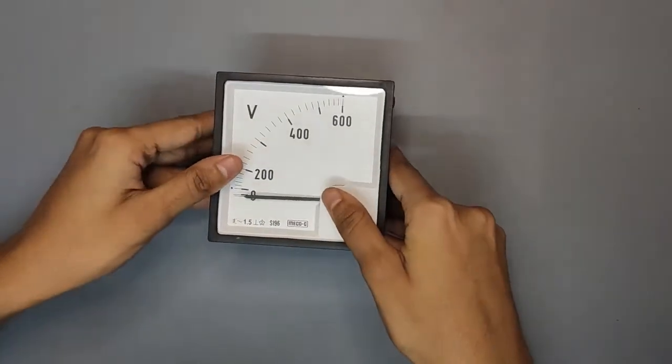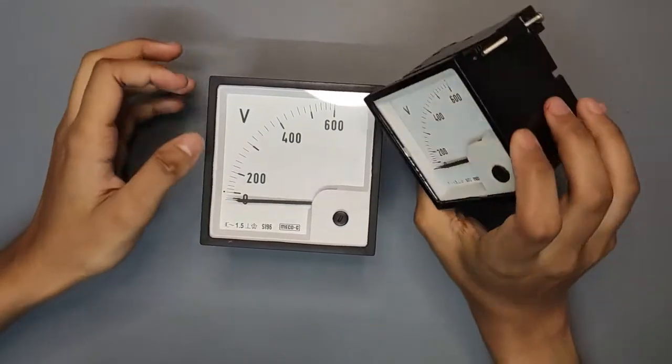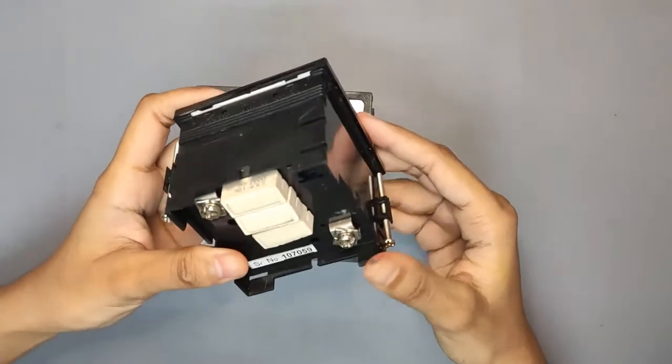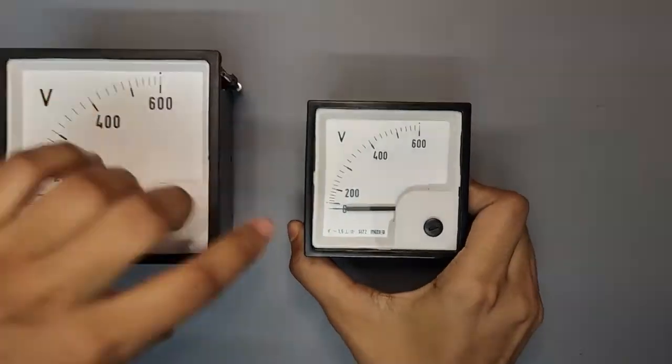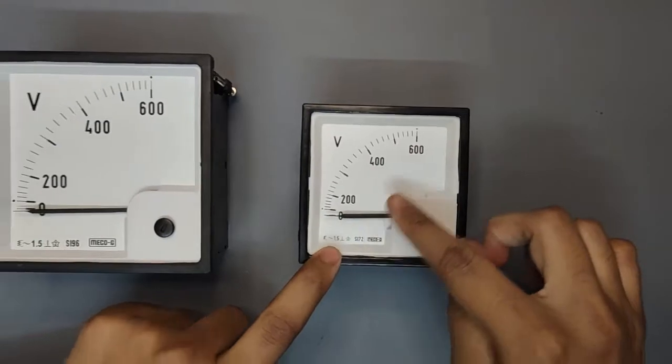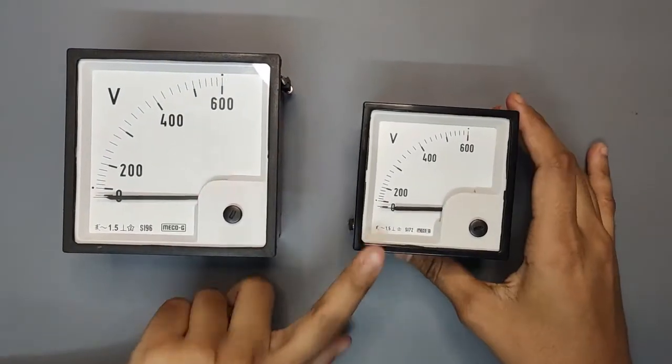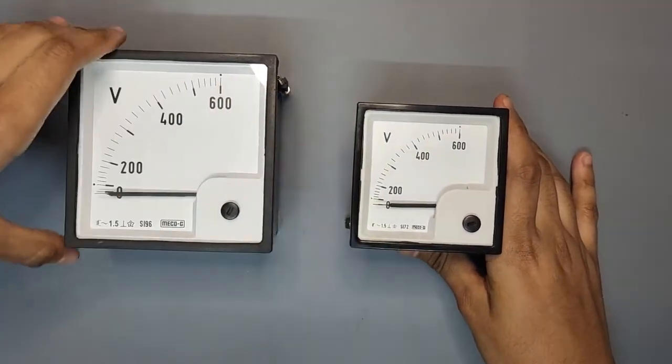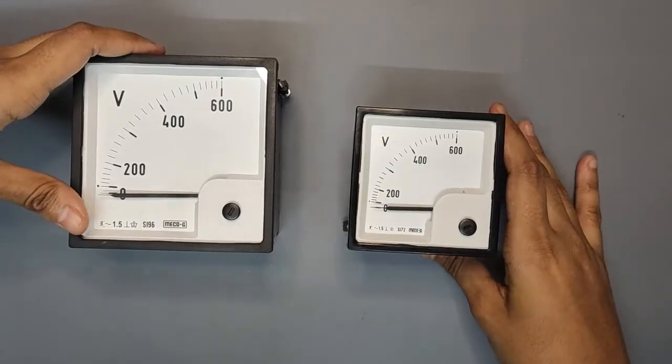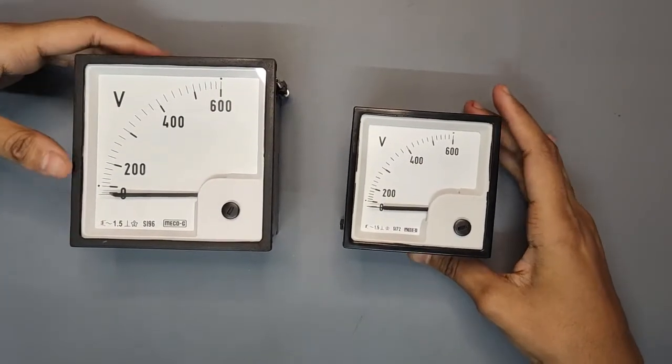Now I am showing you another model that is 48x48 dimension. You can see it here. Its range is up to 600V. So this is just size difference and nothing else. Both are the same model. The cutout dimensions are different.